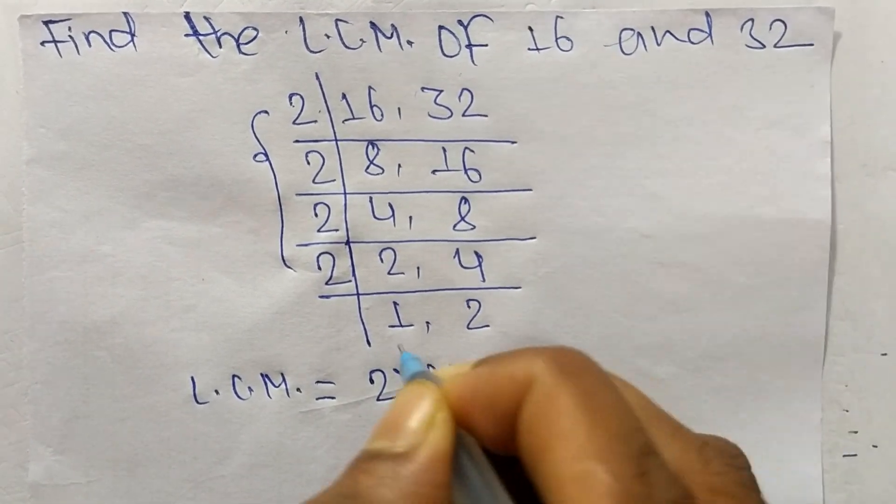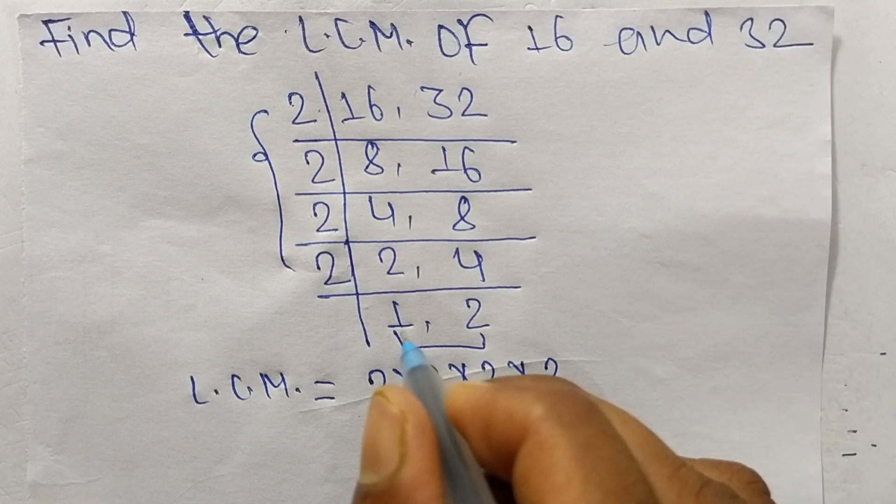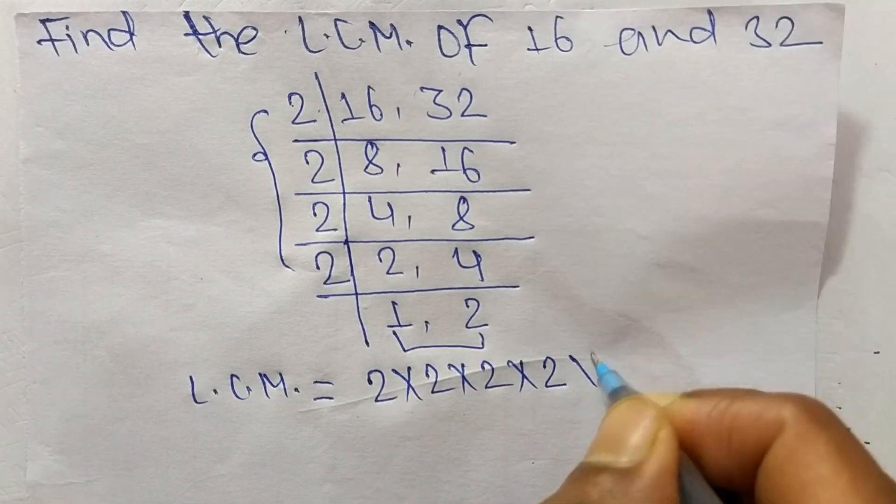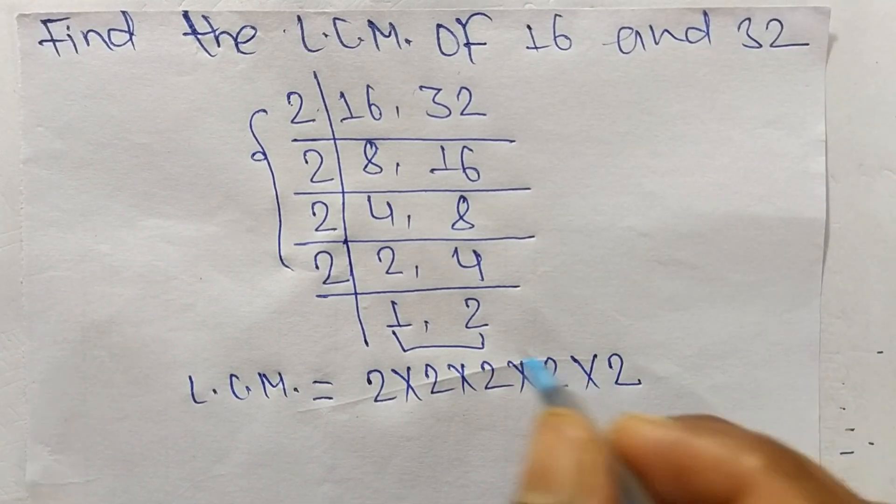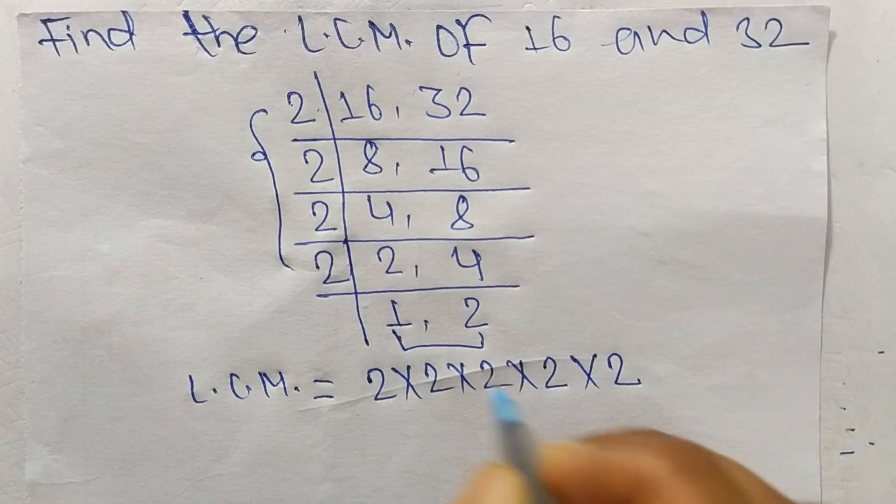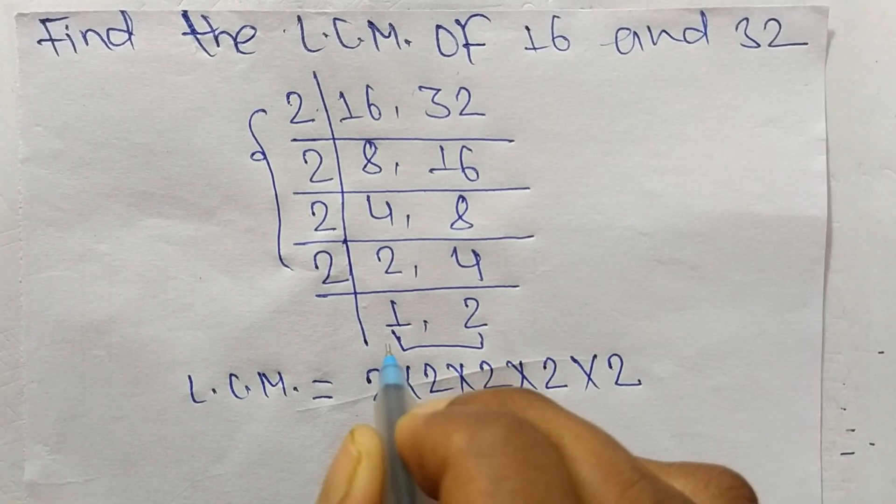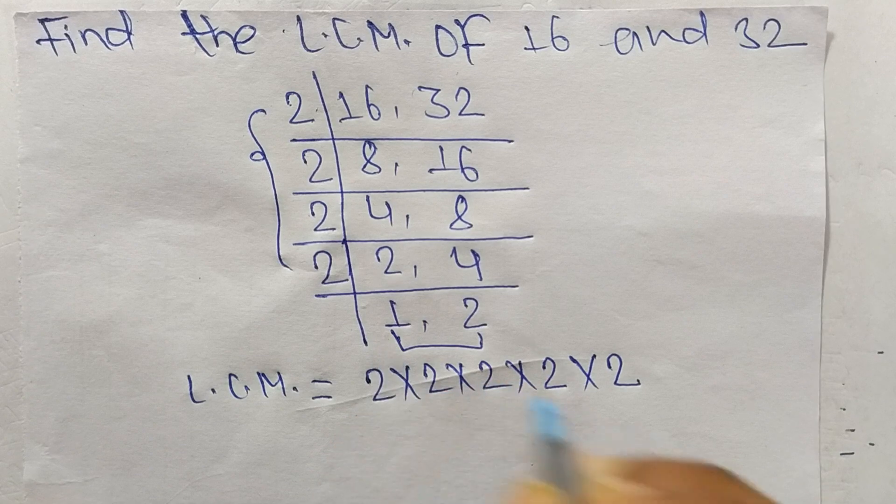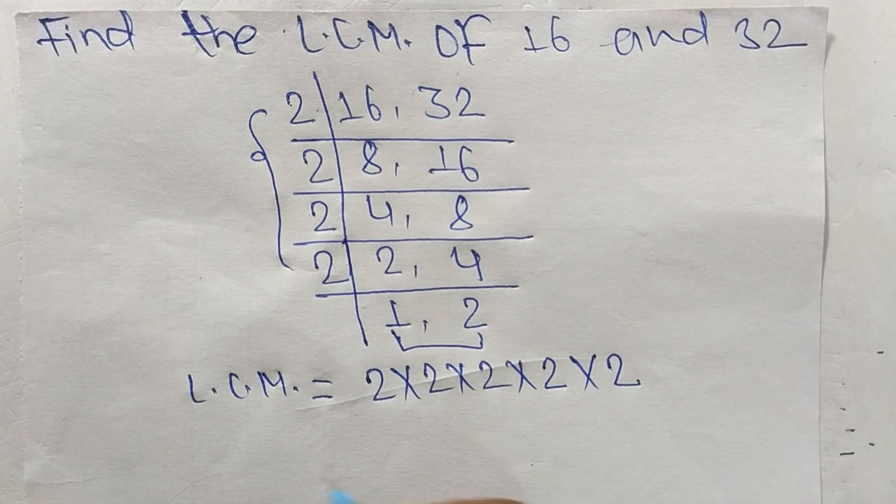We neglect 1 because by multiplying with any number, with 1 we get the same result.